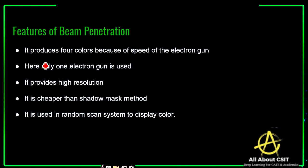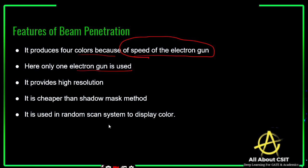The features of beam penetration: it produces four colors — red, green, yellow, and orange — based on the speed of the electron gun. Only one electron gun is used, whereas the shadow mask uses three electron guns. Beam penetration provides high resolution and is cheaper compared to the shadow mask method. It is used in the random scan system to display colors, whereas the shadow mask uses the raster scan system.